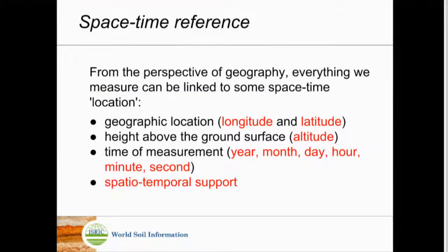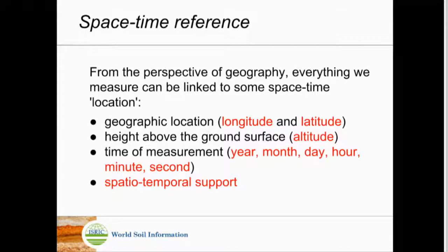I haven't made that yet — if you make it before me, please send it over. Geographical data is data that has a spatial or space-time reference. In Google Earth there's only one coordinate system — WGS84 — with geographical coordinates defined by longitude and latitude, and also altitude, which is the height above the ground surface. Altitude is a key KML specification.